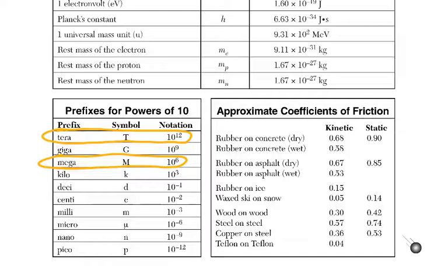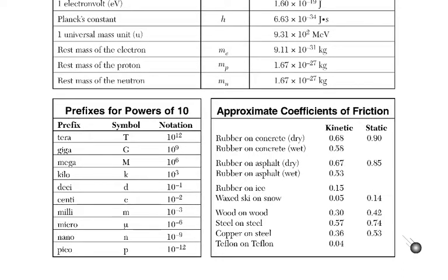Incidentally, 10 to the 12 is 10 to the 6 times 10 to the 6, so tera is really mega-mega. If you ever see prefixes and you don't know what they mean, they are on the front page of the reference table at the bottom. It's also no coincidence that mega means million and tera means trillion.